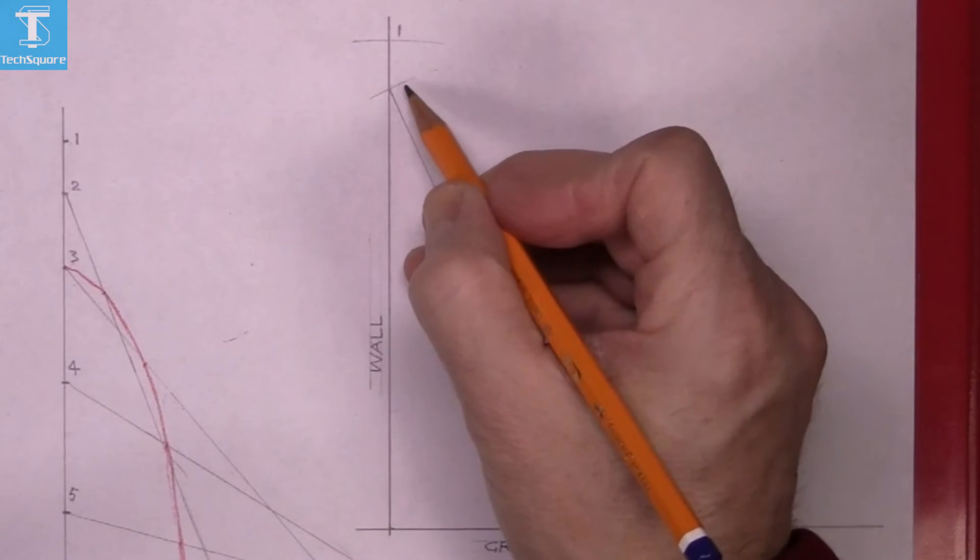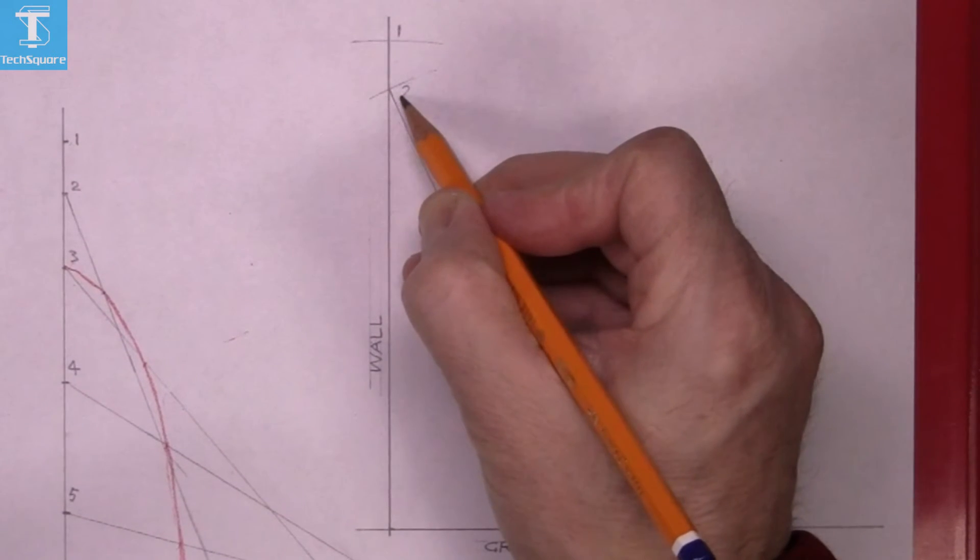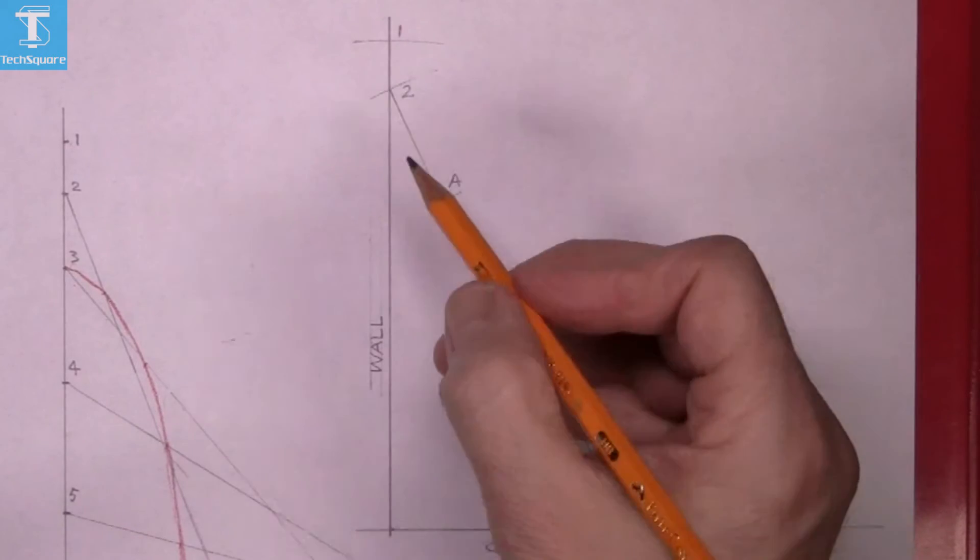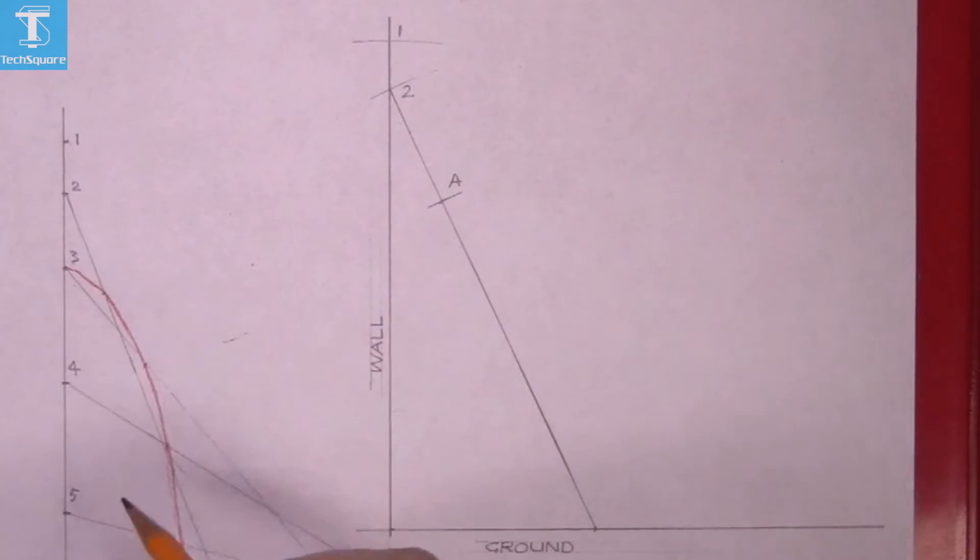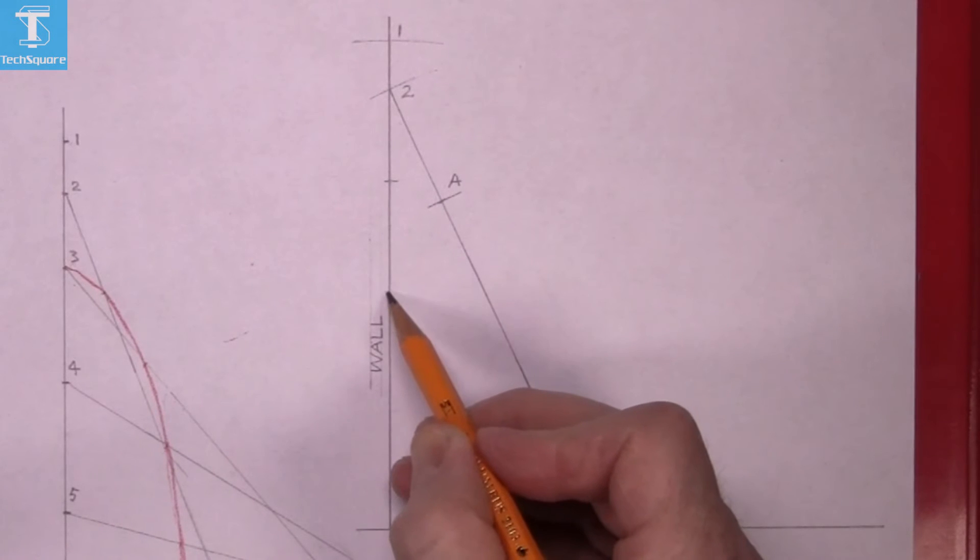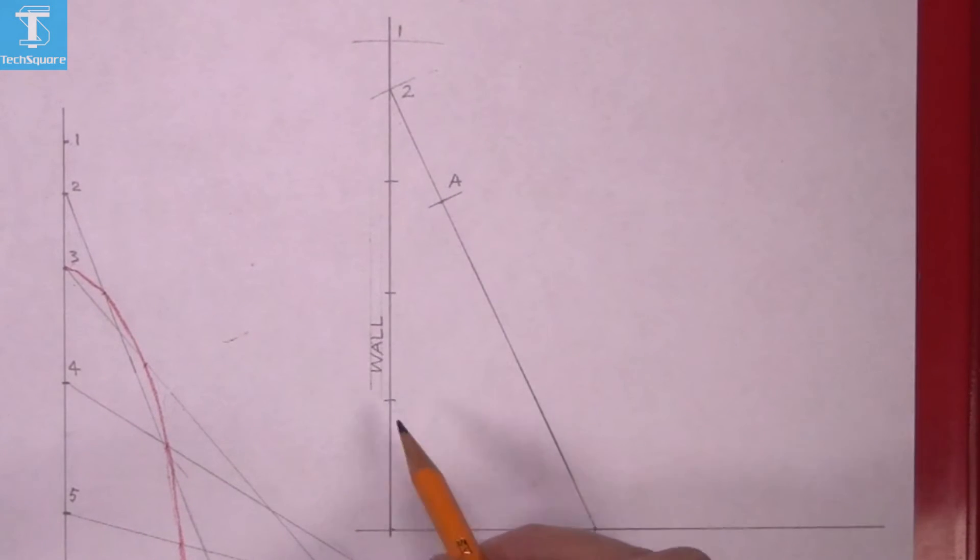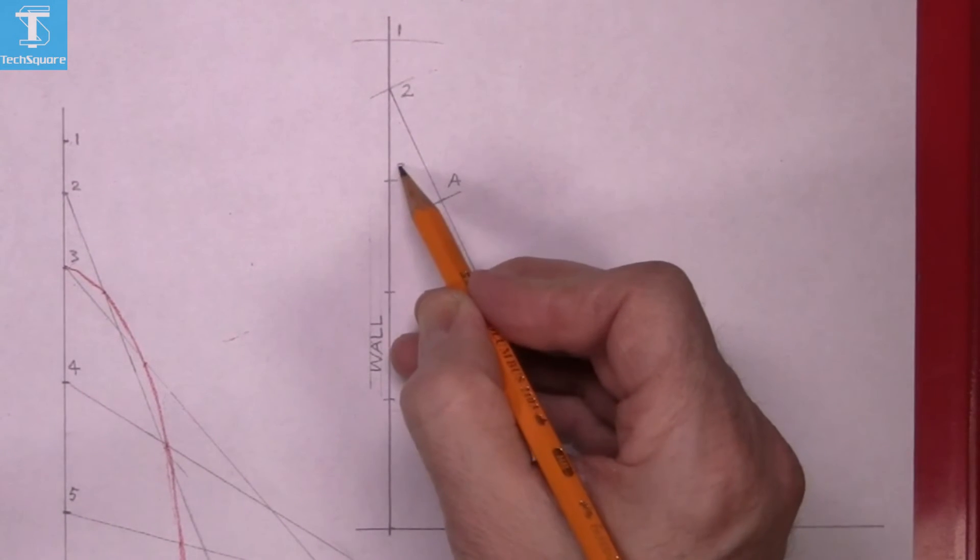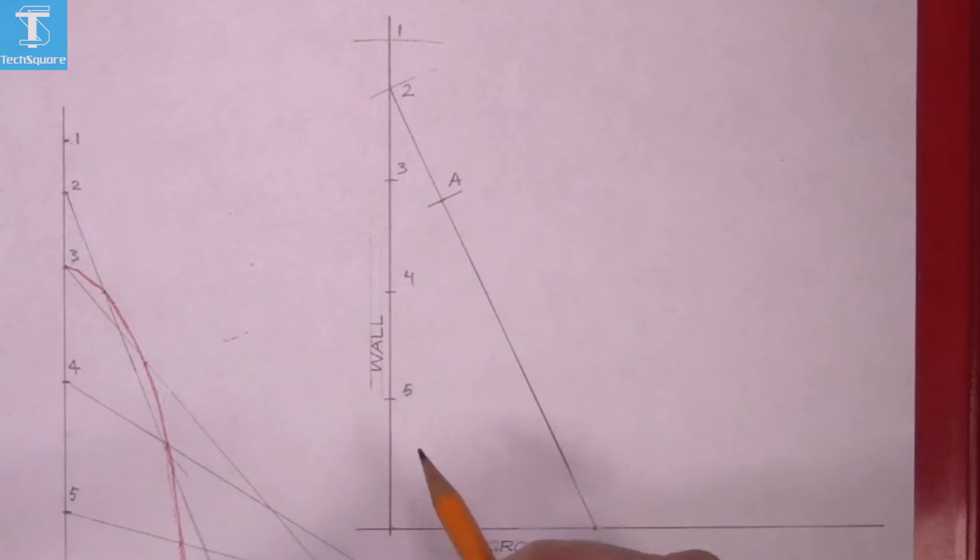We'll take this position to be point two and then mark intermediate points on the wall here, say three, four, and five, and the bottom one. So this is three, four, and five, and the bottom one here, six.